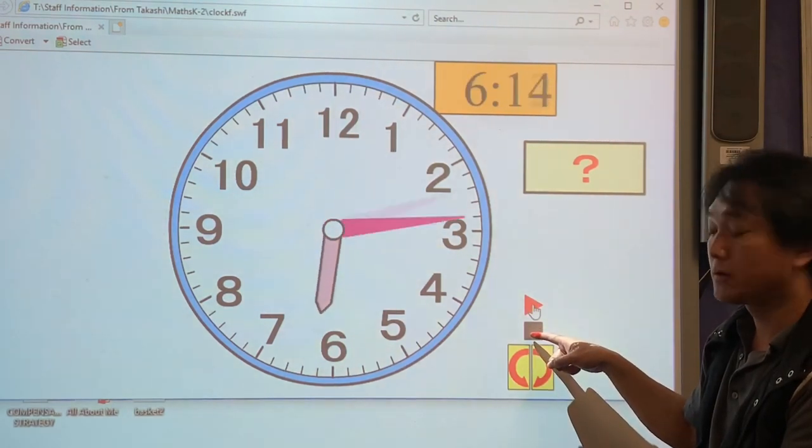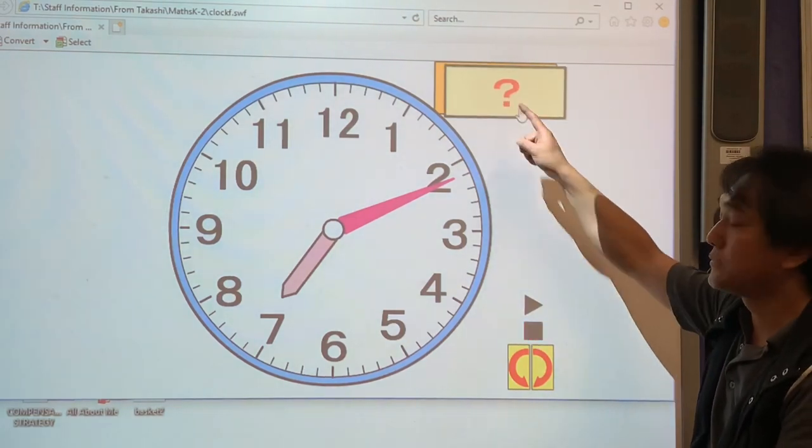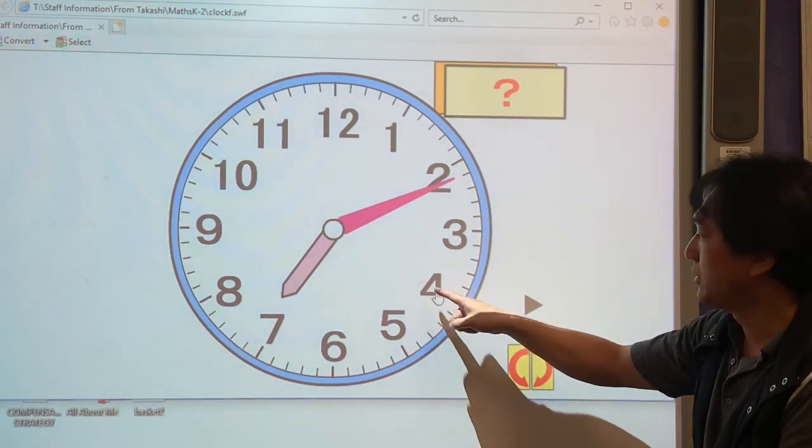So as you move the hands, the digital clock also changes, which is amazing, right? Also, if you click or tap on the number, it just goes to the exact time.